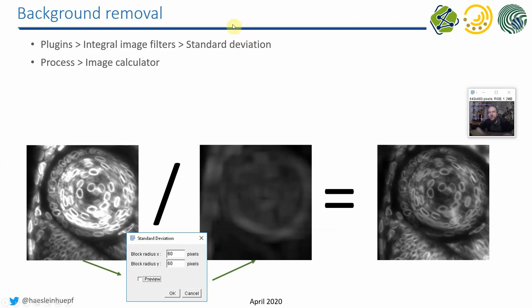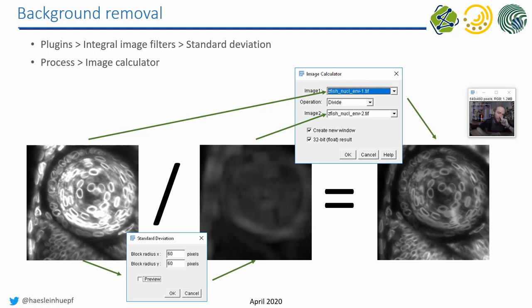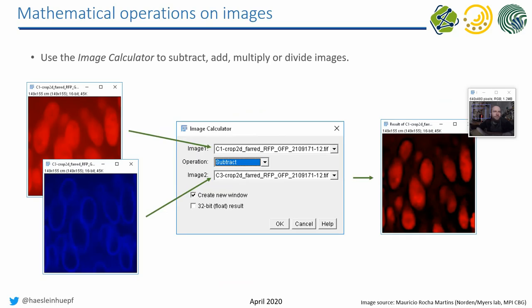You find the standard deviation filter in this menu, and the Image Calculator under the Process menu. Use the Fiji search bar to find the right menu. In the Image Calculator, you enter one image, you enter another image, and you enter which operation to perform. I always recommend checking the '32-bit float result' checkbox to prevent issues — for example, if you subtract one 8-bit image from another 8-bit image. You can also subtract images from one another, as in subtracting the nuclear envelope image from the nuclear image.